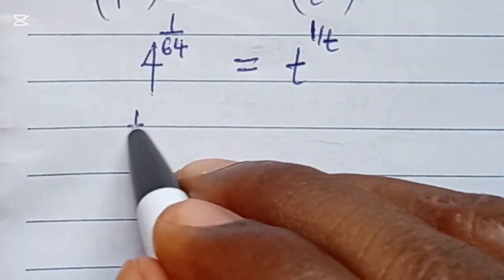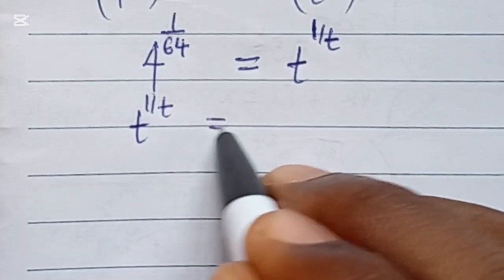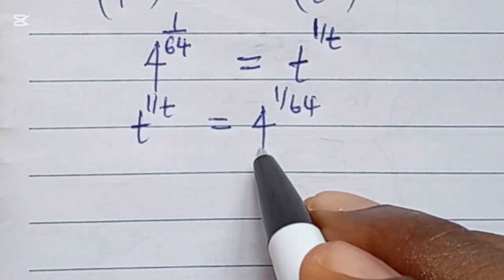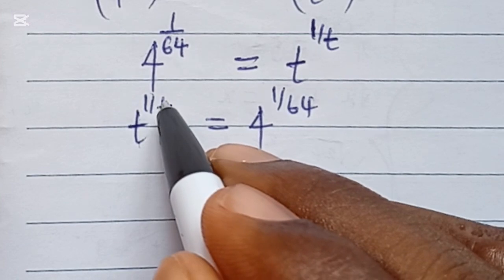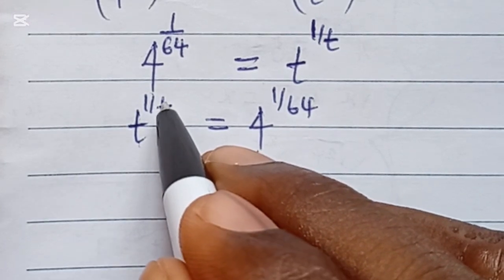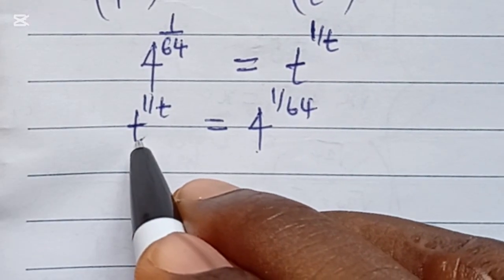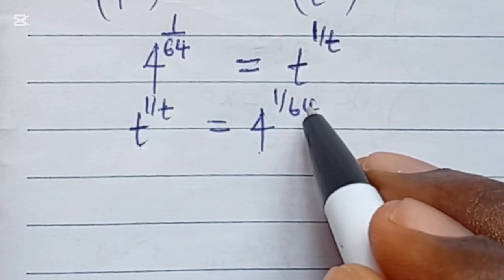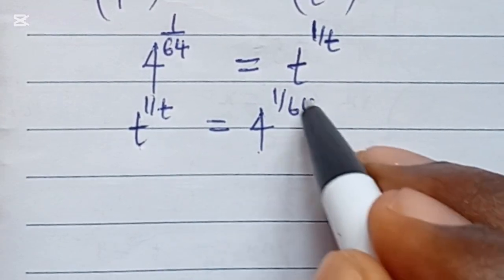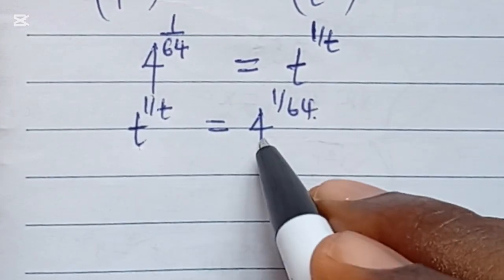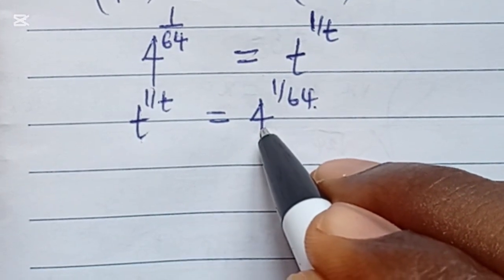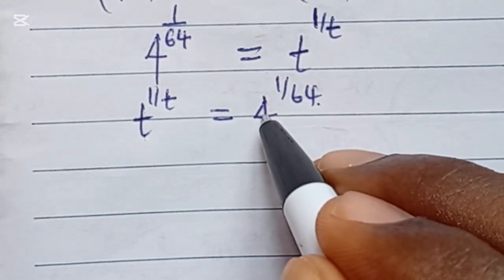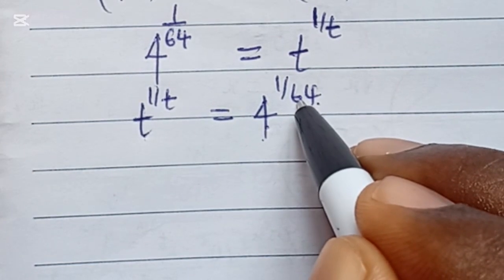On the left-hand side, let's write t to the power of 1 over t, and on the right-hand side, 4 to the power of 1 over 64. We want to write this in a form where the denominator of the power is the same as the base. In this case, we have 4 and 64, so we want the base and the denominator of the power to be the same.